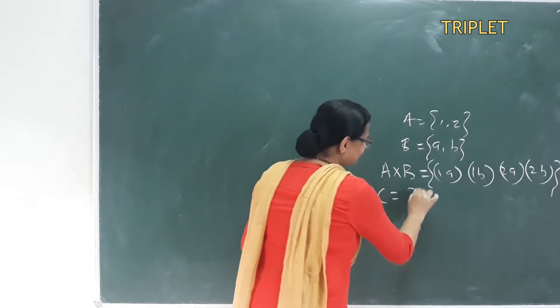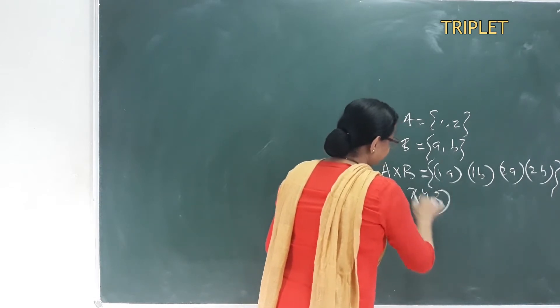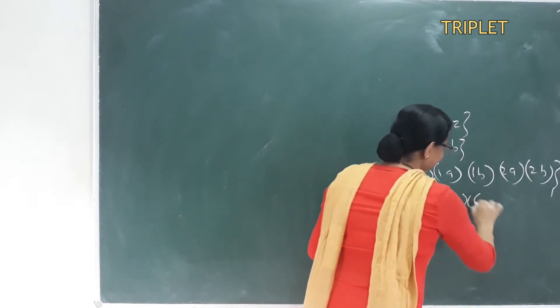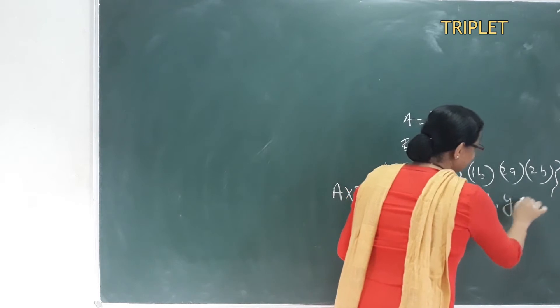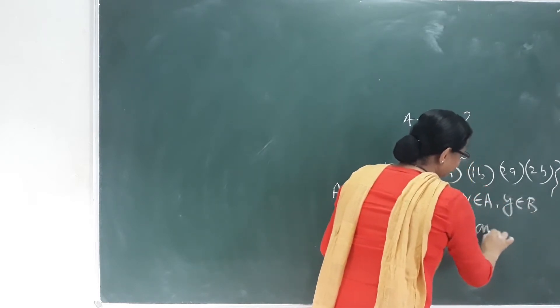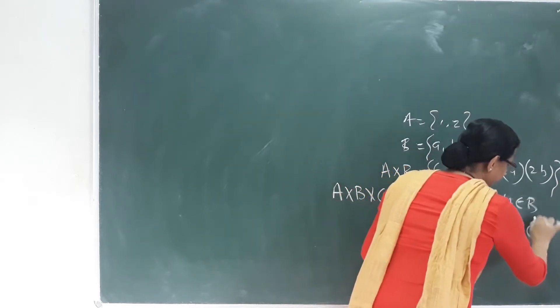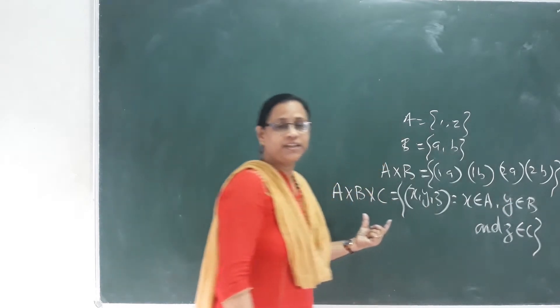The triplet is (x, y, z) such that x is an element of A, y is an element of B, and z is an element of C. This is called the Cartesian triplet.